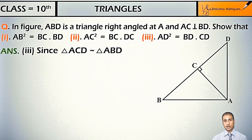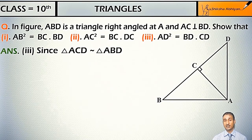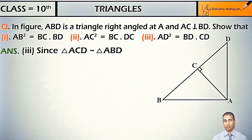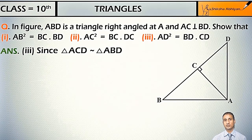Now for the third part, since triangle ACD is similar to triangle ABD, because when a perpendicular is drawn on the hypotenuse, the two triangles formed are similar to each other and also similar to the larger triangle.